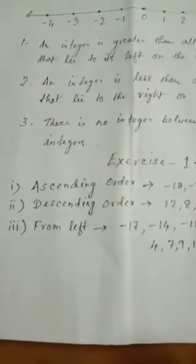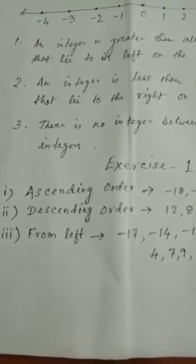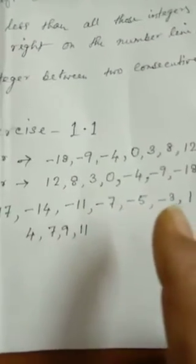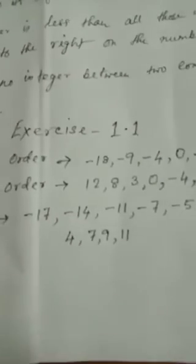And in the third part, some points are marked on the number line. You have to write the number against those points. When you take from the left side, first comes minus 17, minus 14, then 11, then minus 7, then minus 5, then minus 3. When you start from 0 and count towards left, you get these numbers, and then minus 9, and at last 11.